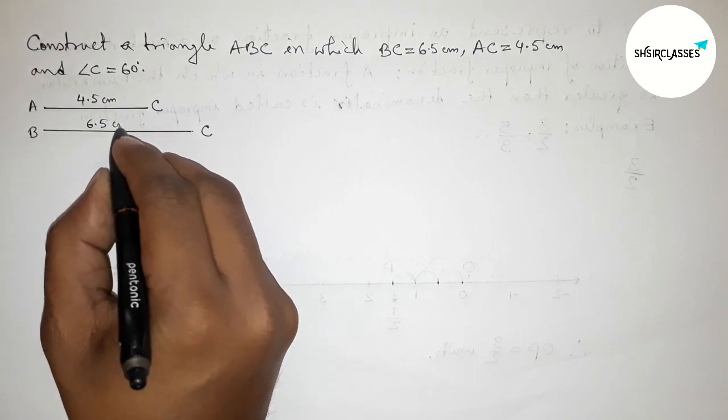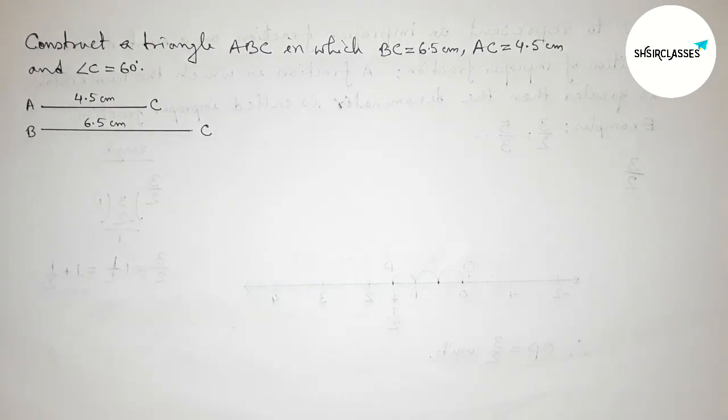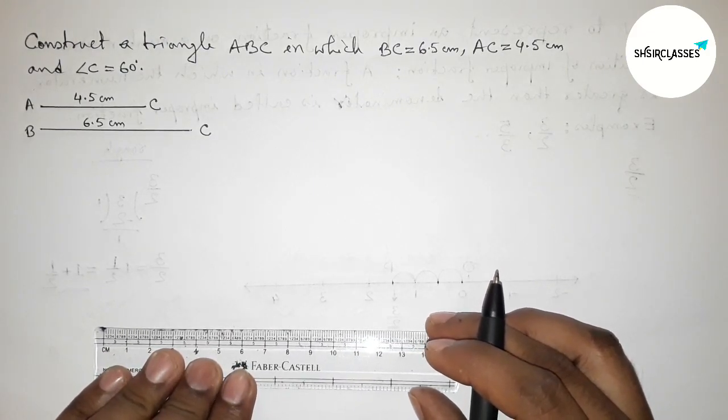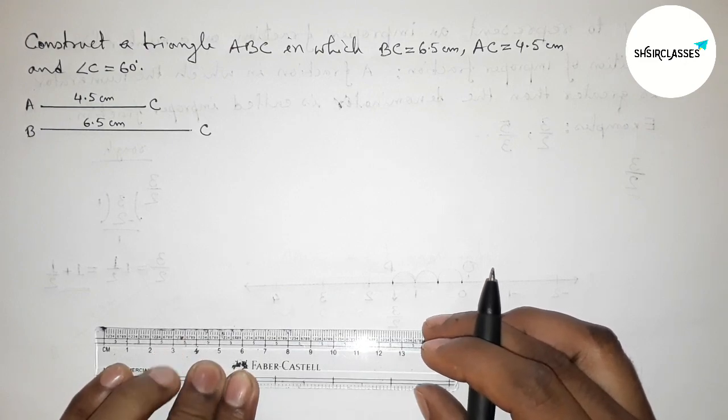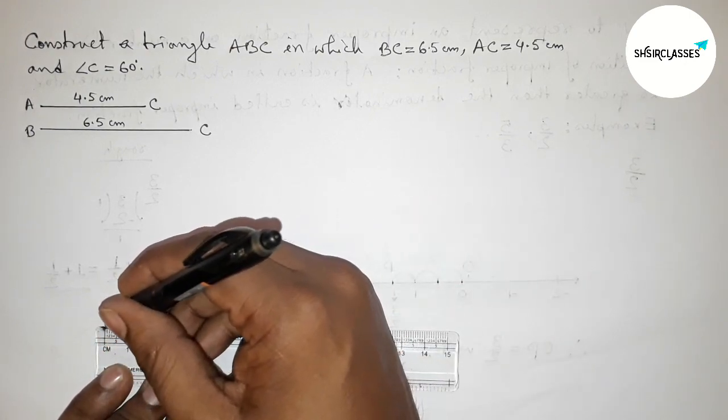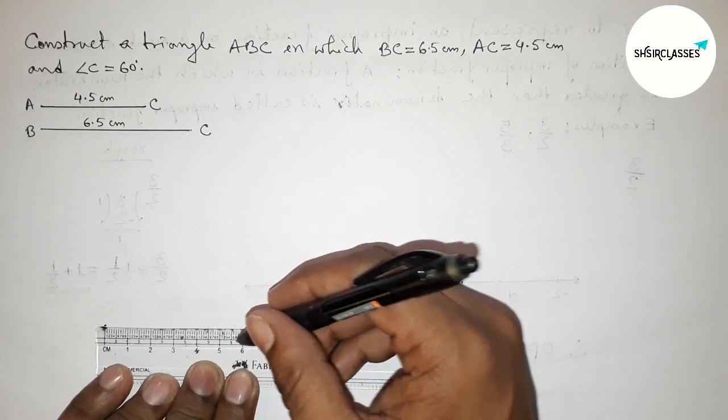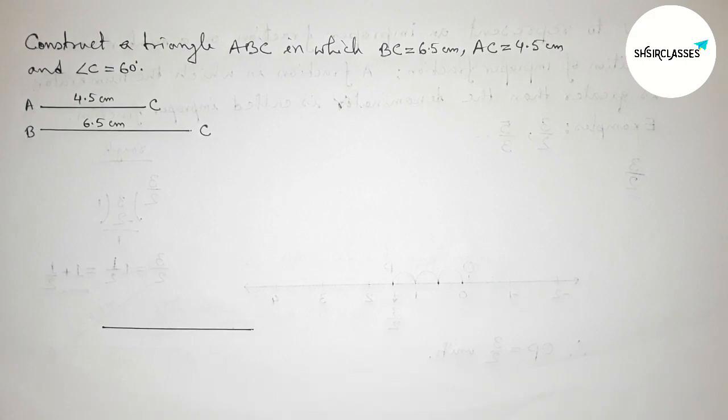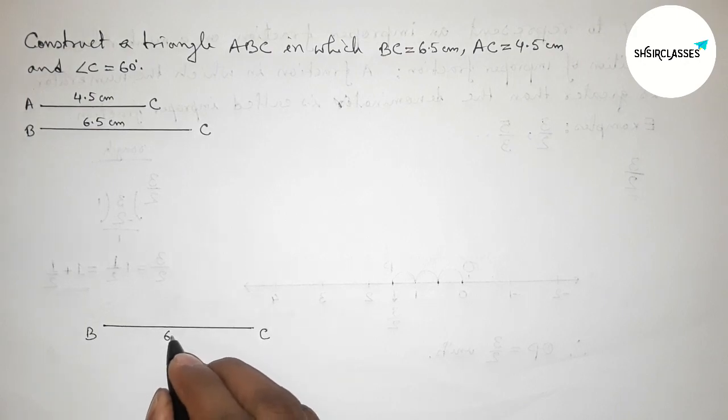Again, we have to draw here the side BC equals to 6.5 centimeters. So this is starting at 0 and this is 6.5 centimeters. So taking here B and here C, BC equals 6.5 centimeters.